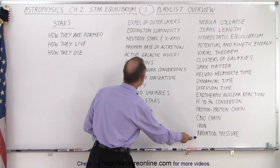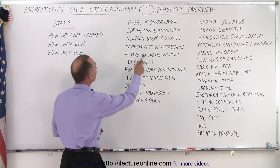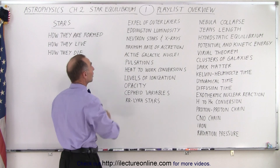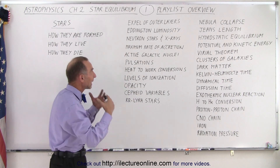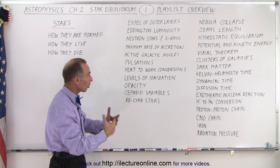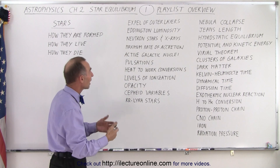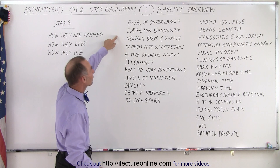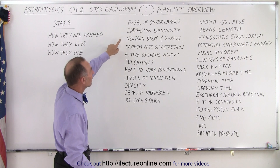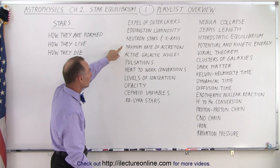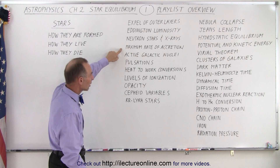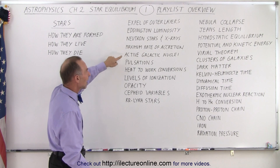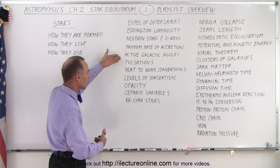We'll also look at radiation pressure and the expelling of the outer layers when the star reaches its final demise. We'll take a look at the Eddington luminosity, and then neutron stars and X-rays, maximum rate of accretion, active galactic nuclei, and pulsation.